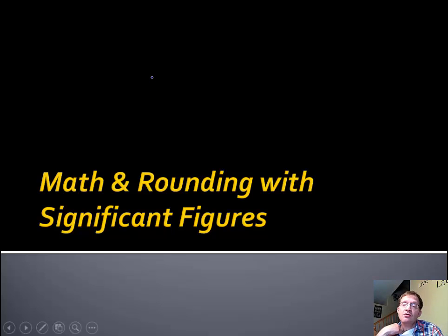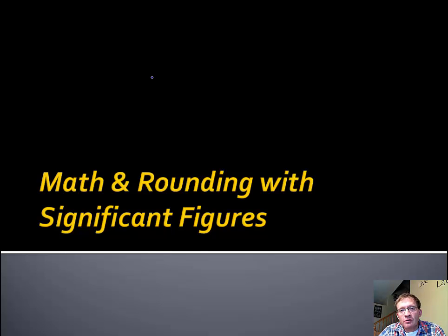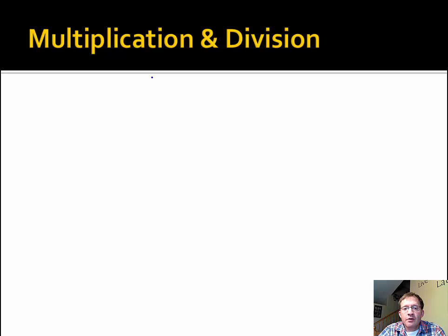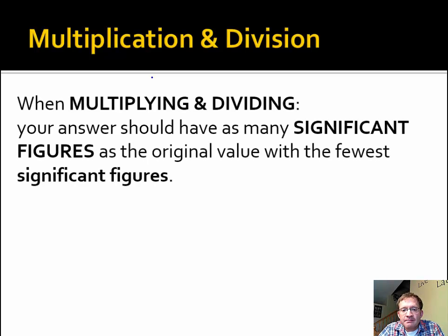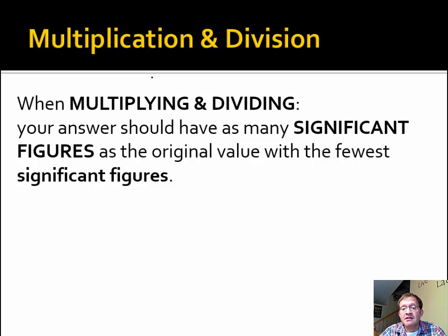To do math with multiplication and division — which is what we do a lot more of in chemistry than addition and subtraction — the rounding will be based on significant figure rules. For multiplication and division, the rule is this: when multiplying and dividing, your answer should have as many significant figures as the original value with the fewest significant figures. It sounds a little like addition and subtraction, but that's all about decimal places. This is about significant figures.